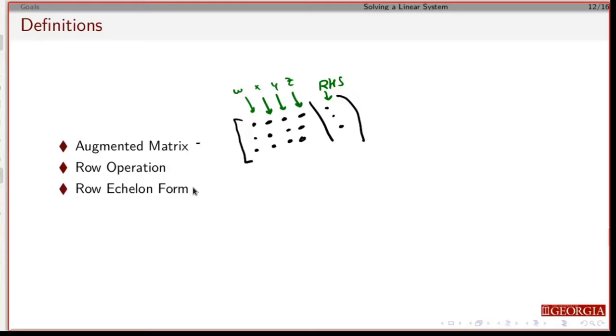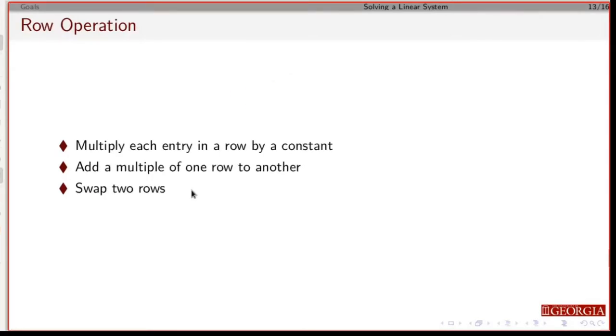You need to recognize what row echelon form is and when a matrix is in row echelon form. Row operations—these are all row operations.